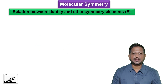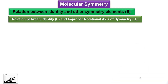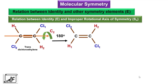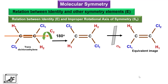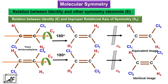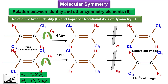Now let's look at the relation between the identity element and the improper rotational axis of symmetry, again considering transdichloroethylene. If we rotate this molecule through 180 degrees around a C2 axis followed by reflection in a plane perpendicular to that axis, we get an equivalent image. Repeating the same operation gives an identical image. So S2 equals C2 times sigma-H, and S2 raised to 2 equals C2 raised to 2 times sigma-H raised to 2. Since C2 squared equals E and sigma-H squared equals E, we get S2 squared equals E — an identical image.